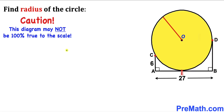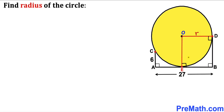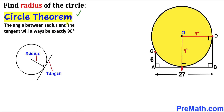Note that this figure may not be 100% true to scale. In our first step, I have connected center O with point D — OD is the radius of this yellow circle, represented as lowercase r. I have also connected center O with point E, so OE is also radius r.